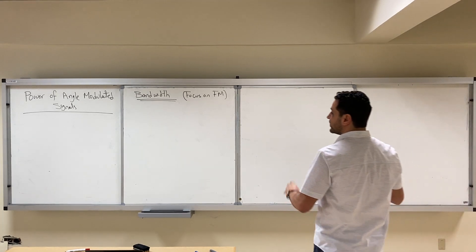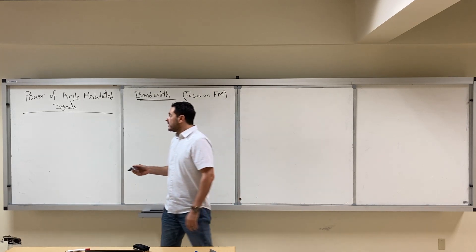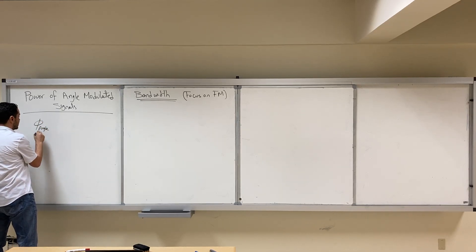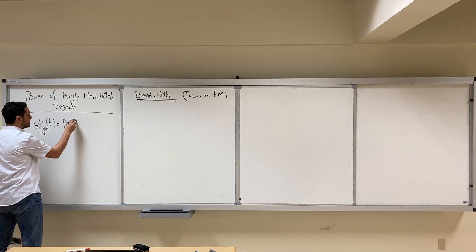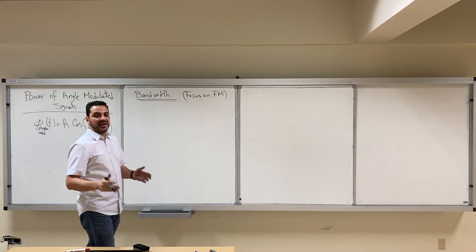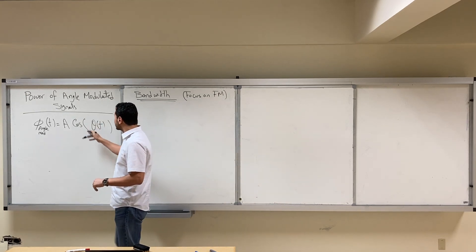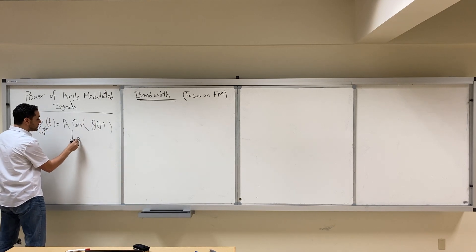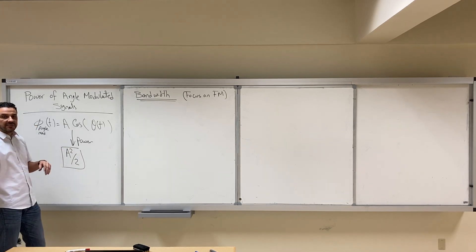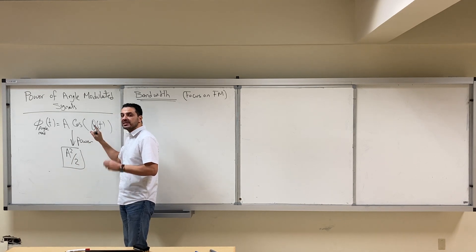In this video we are going to discuss two important properties of angle modulated signals: the power and the bandwidth. Let's start with the power, which is very easy. Any angle modulated signal can be written as A cosine(θ(t)), and the power is always A squared over 2, regardless of what is inside the cosine — whether it's FM, PM, or a general angle modulated signal.